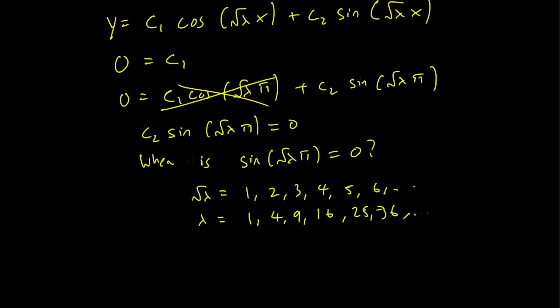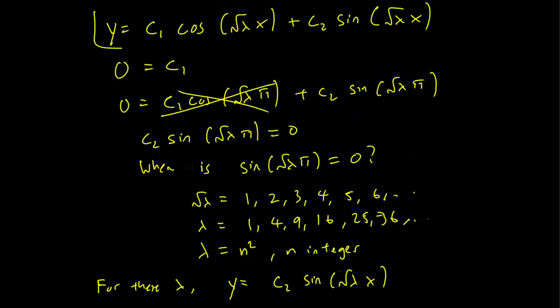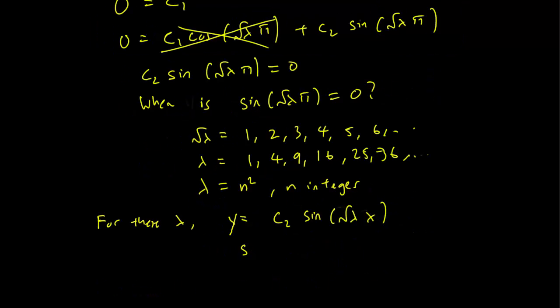So for these values, for lambda equals n squared for n integer, we'll have sine of root lambda pi equals zero. And c₂, then the only equation we have is c₁ equals zero. So for these lambda, the general solution is just going to be y equals c₂ sin(√λ x). This is from our general solution up here. c₁ equals zero and c₂ can be anything. And this solution is going to be true for any c₂. So our eigenvalues for the problem are basically these ones.